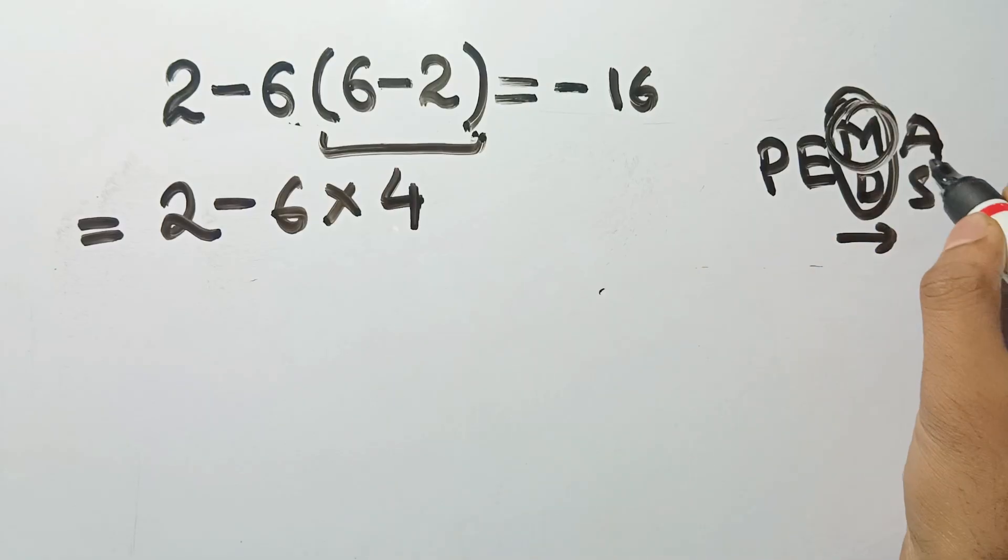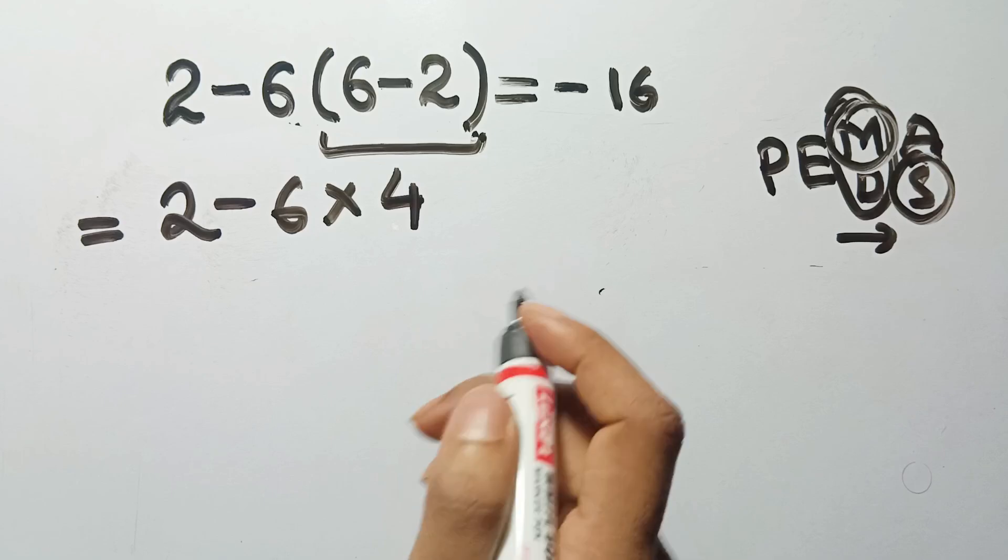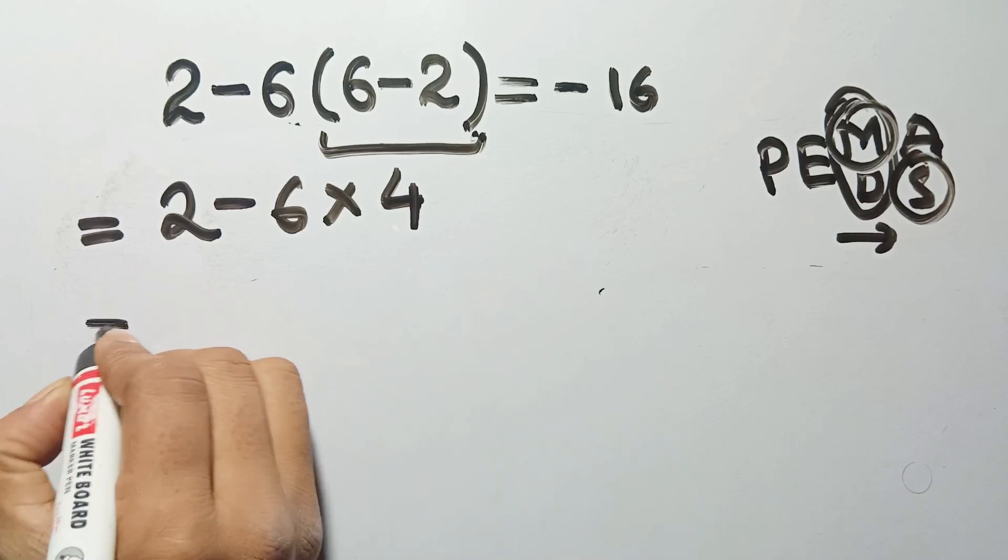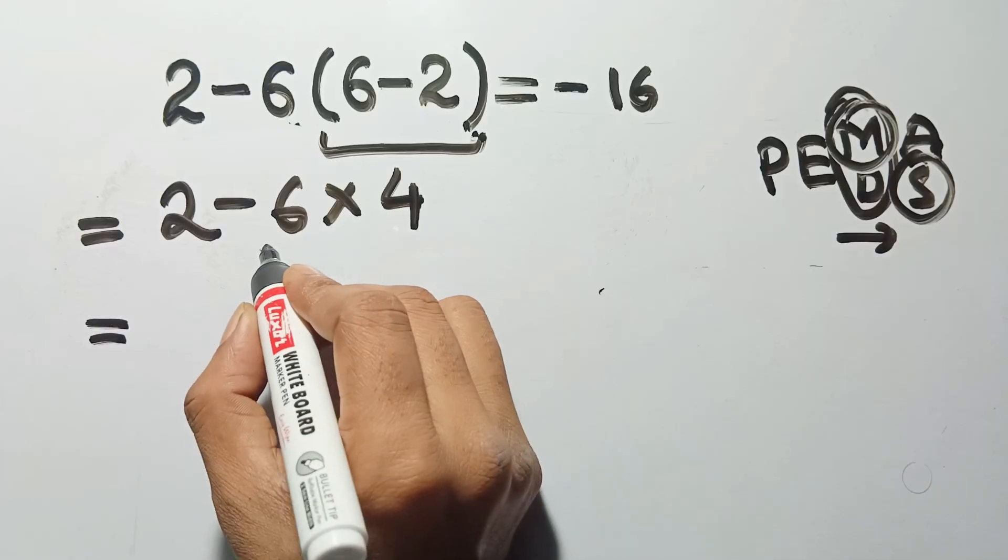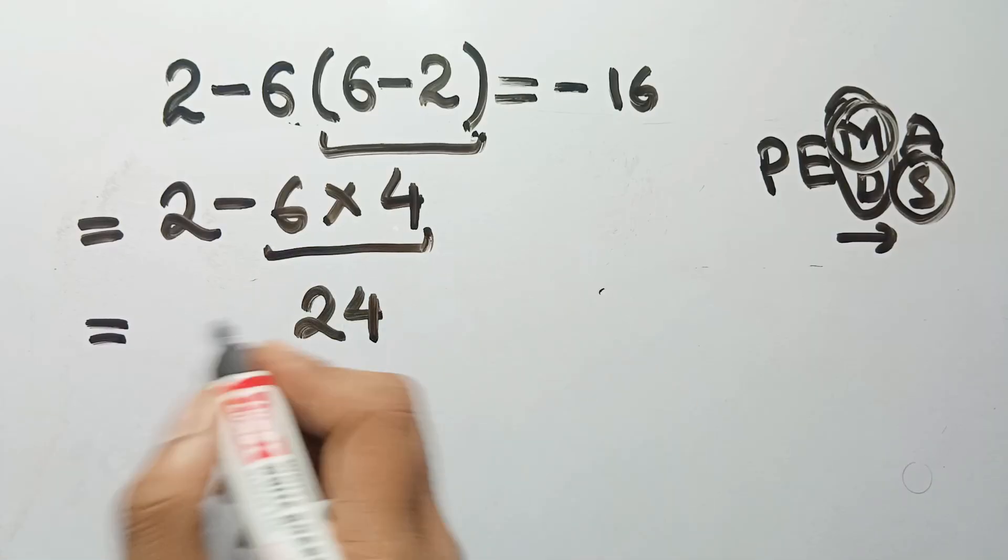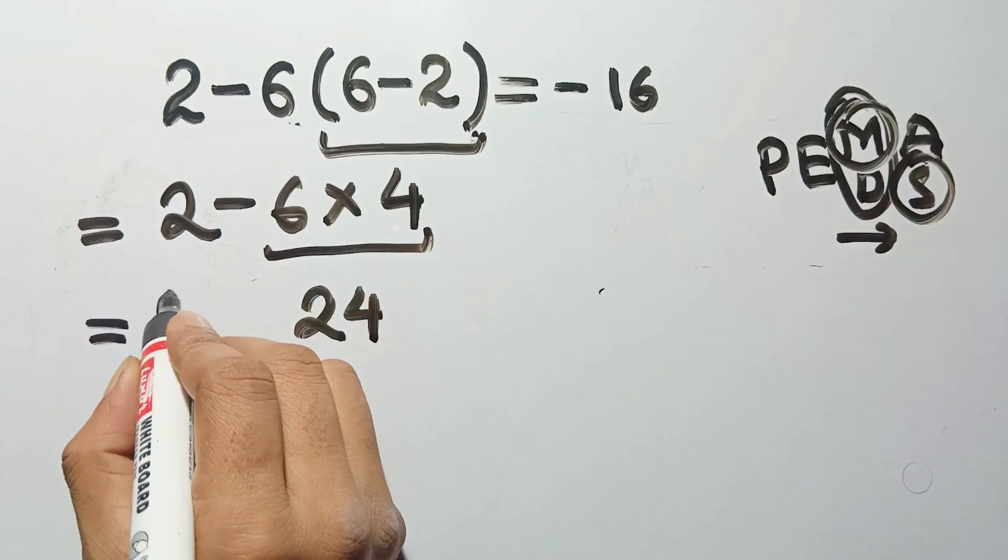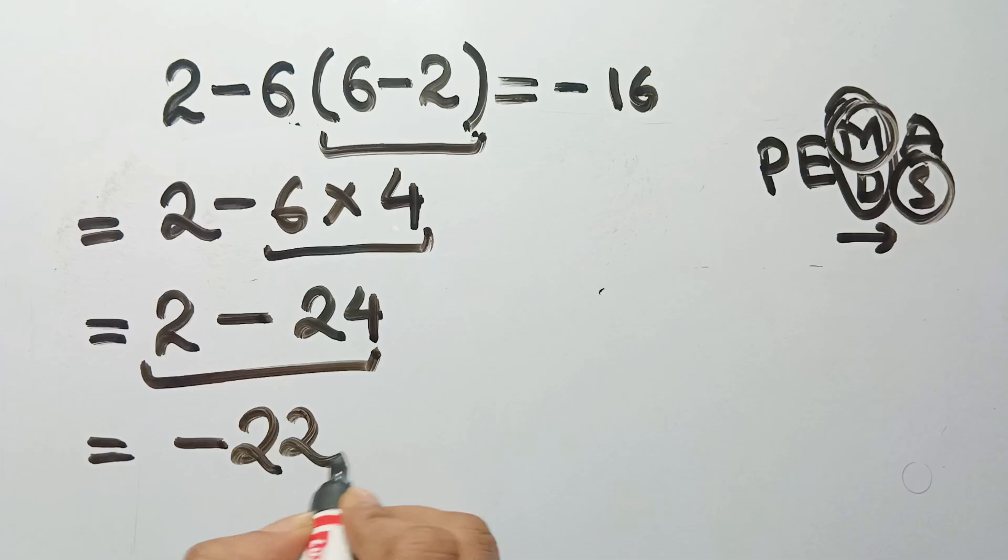Multiplication always comes first when it's alongside addition or subtraction. So, step by step the correct way. 2 minus 6 times 4. Do the multiplication first. 6 times 4 equals 24. Then the subtraction. 2 minus 24 equals negative 22.